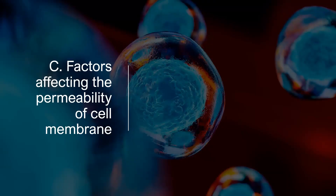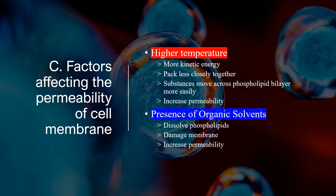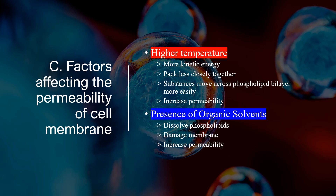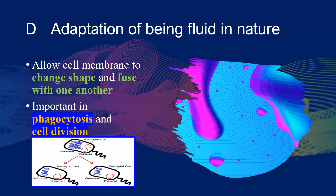There are some factors affecting the permeability of the cell membrane. At higher temperature, the phospholipid molecules gain more kinetic energy and pack less closely together, so substances move across the phospholipid bilayer more easily and permeability increases. Organic solvents can dissolve phospholipids and damage their membranes, which also increases permeability. The cell membrane is fluid in nature, which allows cell membranes to change shape and fuse with one another — that is important for phagocytosis, which we will discuss later, and cell division, which we will cover in another video.